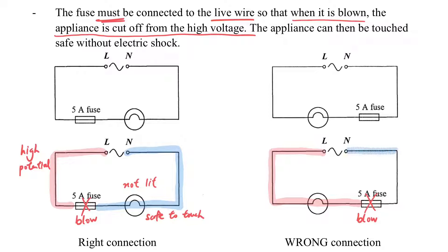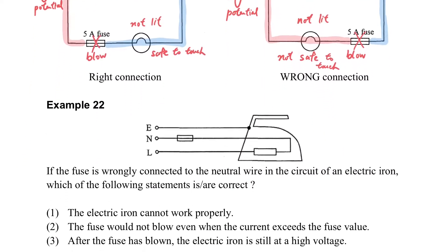Then it is not safe for us to touch the electrical appliances at this moment. Because we don't know what kind of malfunction has happened there. That's why the live wire should be connected with the fuse, and the fuse should be connected to the live wire side.